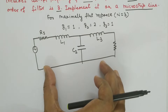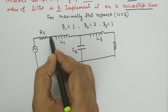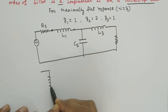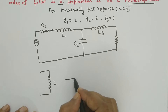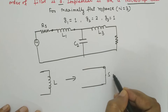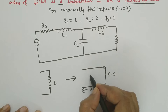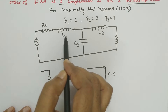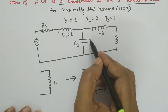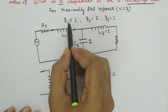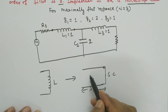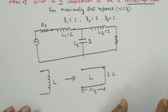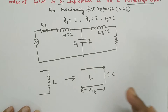We will start from the inductor element, then the capacitor, and then apply the Kuroda identity. From Richards transformation, a given inductor can be transformed into a short-circuited transmission line having length lambda by 8 and characteristic impedance equal to the inductance L. For the normalized values: L1 is 1, C2 is 2, and L3 is 1, taken from G1, G2, and G3. L gives the normalized characteristic impedance; multiplying by 50 gives the actual impedance, but we will do that after fully implementing the design.